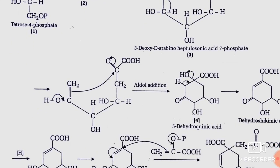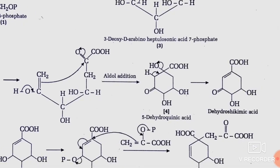Through this intramolecular aldol condensation, cyclization takes place. The 7-carbon compound undergoes internal aldol condensation — here you can see the carbonyl and hydrogen, with base-catalyzed release and double bond formation. Carbon attack and carbon-oxygen bond formation yield hydrocinnamic acid through ring closure.